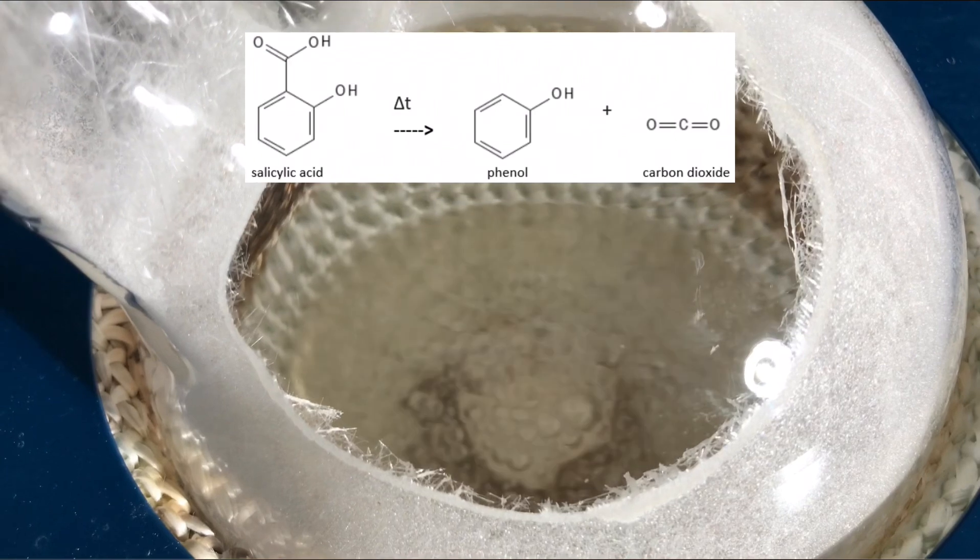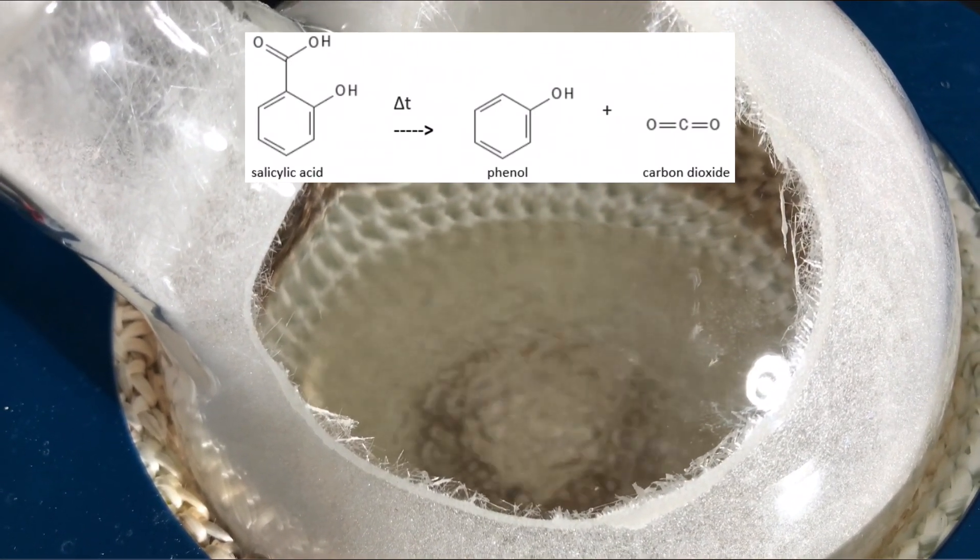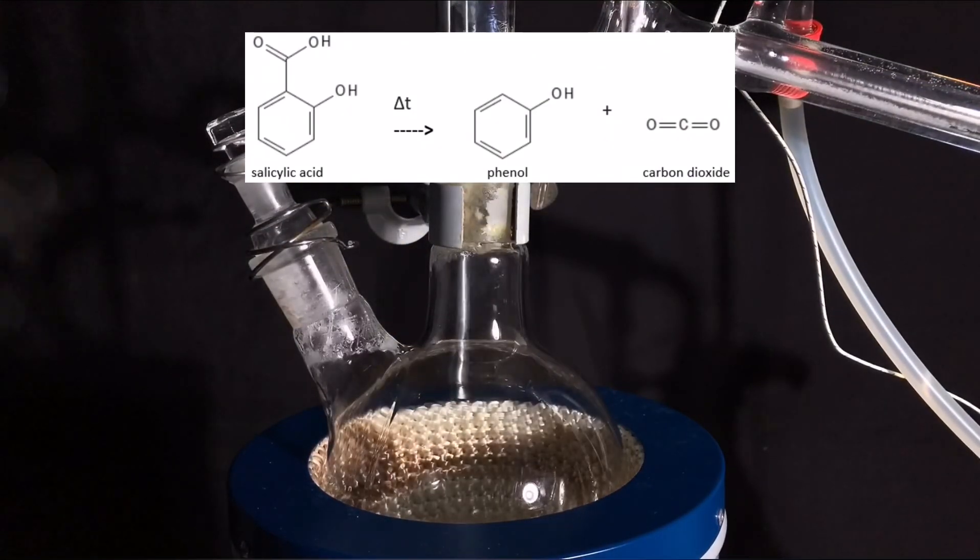As I already mentioned, at 200 degrees celsius, salicylic acid starts to decompose. A decarboxylation reaction takes place. Salicylic acid breaks down into phenol and carbon dioxide.